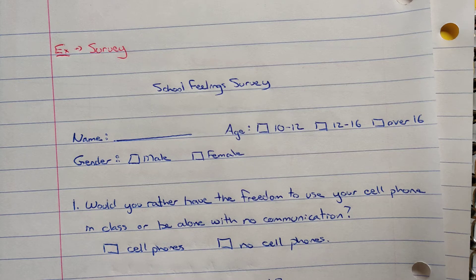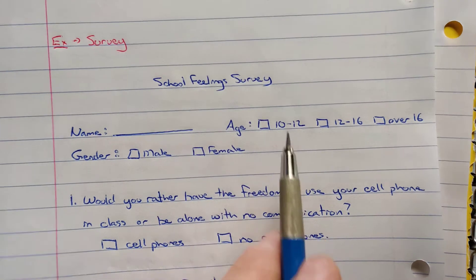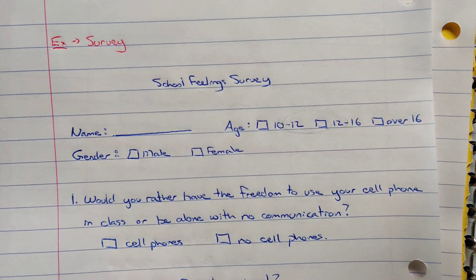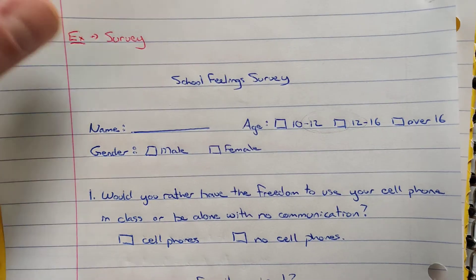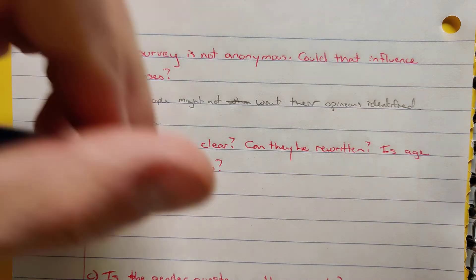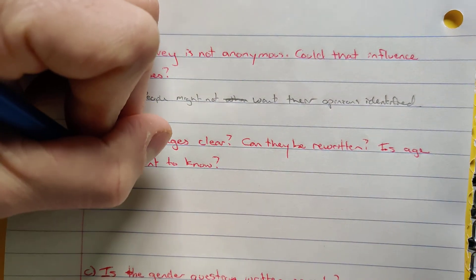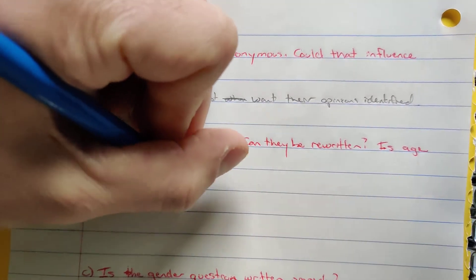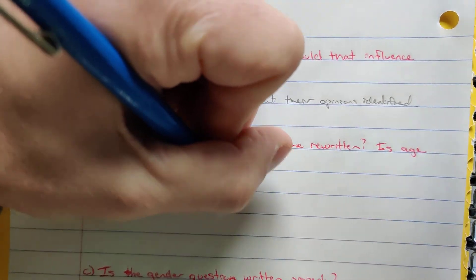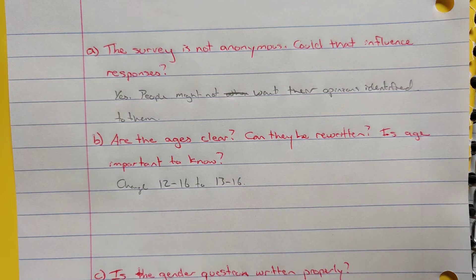Over 16 is fine because now I got 12 to 16 and then over 16, but it doesn't really give me a good choice in terms of 12 year olds. So you might change that and change 12 to 16 to perhaps 13 to 16. So then we have 10 to 12, 13 to 16 and then over 16.